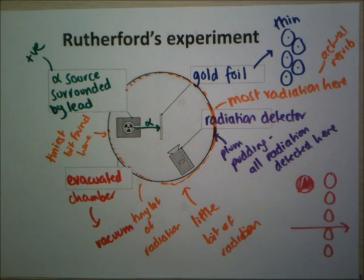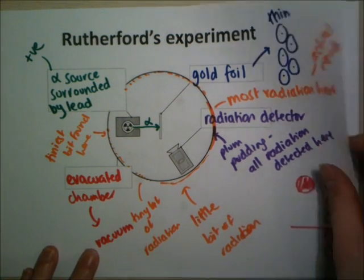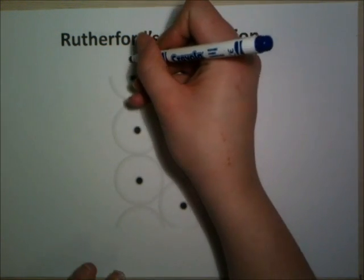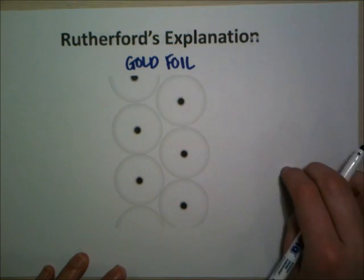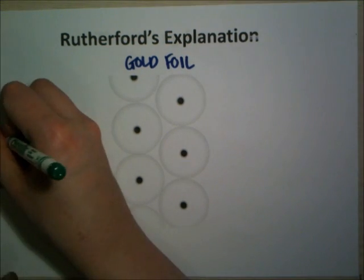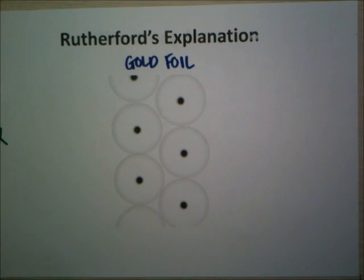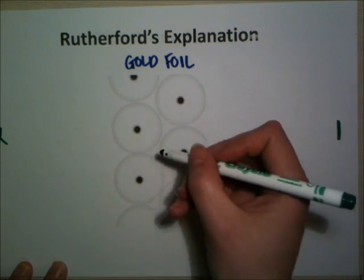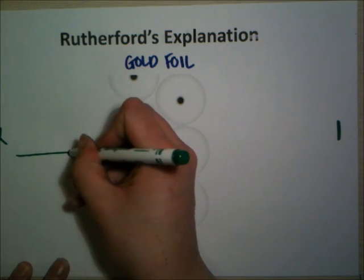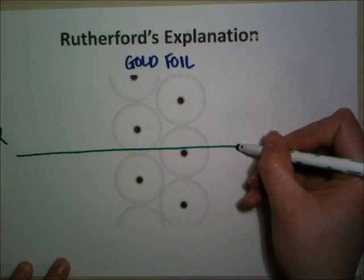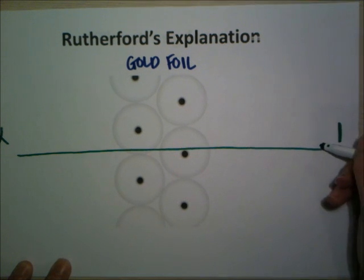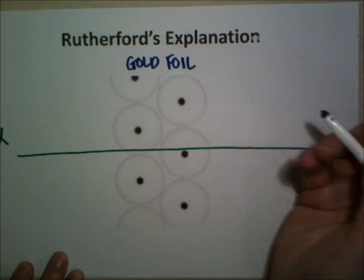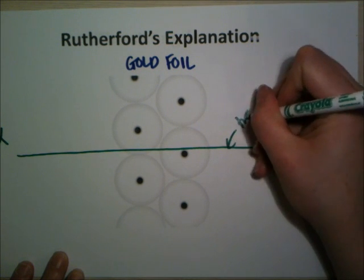So he knew that his model must be wrong, and he came up with an idea about why this happened. Here's my picture of my gold foil - we can see it's only two atoms thick. The alpha particles are coming from the alpha source over here. The vast majority were found on the far side of the gold foil going straight through, and that happened when an alpha particle travels through an atom without travelling too closely to a nucleus - it travels in the gaps between nuclei.